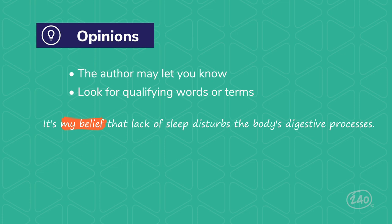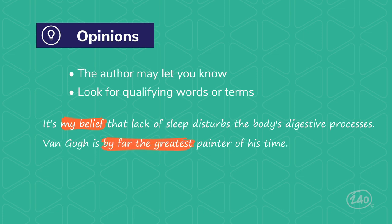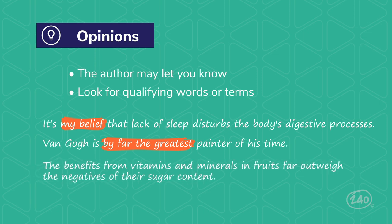More opinion examples: 'Van Gogh is by far the greatest painter of his time.' The phrase 'by far the greatest' is a qualifying phrase modifying the relative quality of Van Gogh — this is how the author feels and cannot be proven, so it's an opinion. 'The benefits from vitamins and minerals in fruits far outweigh the negatives of their sugar content' — the phrase 'far outweigh' modifies the magnitude of the benefits, so that's an opinion. 'Kids never love broccoli' — the word 'never' makes this an opinion, since some kids definitely do love broccoli.